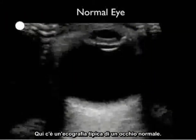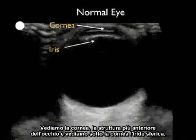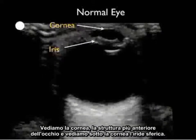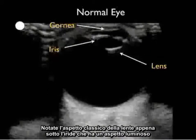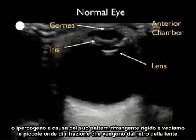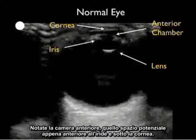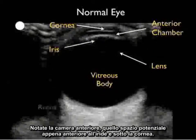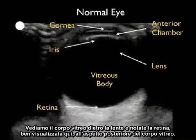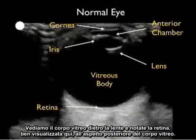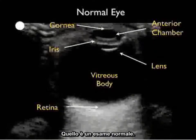Here's a typical ultrasound of a normal eye, taken in the horizontal or side-to-side probe configuration with the probe marker lateral. We see the cornea, the anterior-most structure of the eye, and below the cornea the rounded iris. Note the classic appearance of the lens just below the iris, which has a hyperechoic or bright appearance due to its hard refractive pattern, with refraction waves coming off the back of the lens. Note the anterior chamber — that potential space just anterior to the iris and below the cornea. We see the vitreous body behind the lens and note the retina, well seen here, at the posterior aspect of the vitreous body. This retina is well tacked down and in opposition to the posterior aspect of the eye — that's a normal examination.